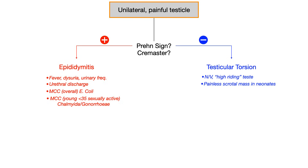The way to remember this — because the Prehn's sign and cremaster go together — is you really just need to memorize what's happening with the Prehn's sign. If the Prehn's sign is positive, you also know it's positive cremaster for epididymitis. And then the opposite is true for the negative signs.